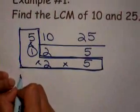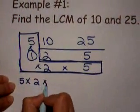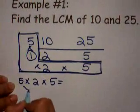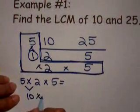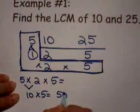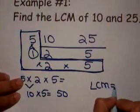because it's irrelevant. So 5 times 2 times 5, 5 times 2 is 10. 10 times 5 is 50. So your LCM is 50.